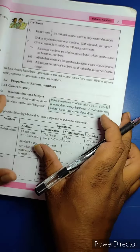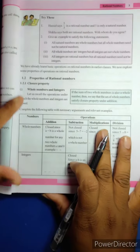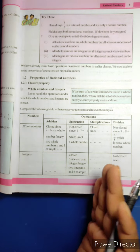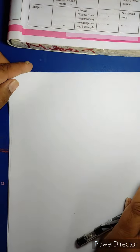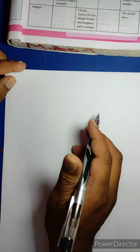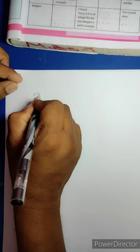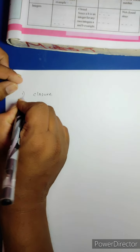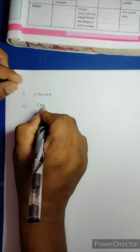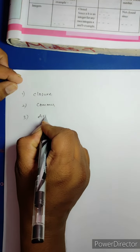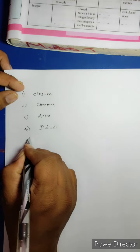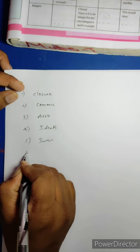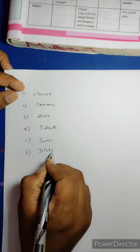Properties of rational numbers. I think we already learned about properties in previous classes. What are the properties up to eighth class? Closure property, Commutative property, Associative property, Identity property, Inverse property, and Distributive property.